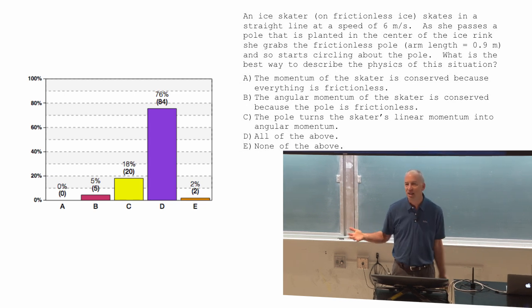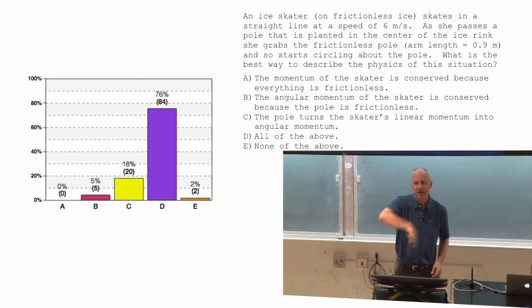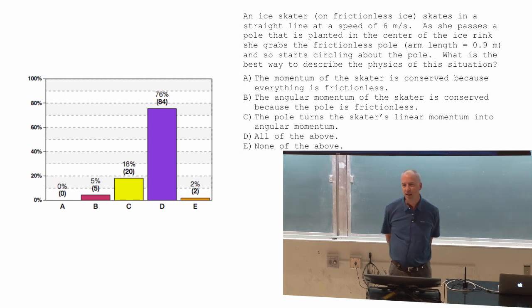Okay, to the extent that it is frictionless, which I told you that it is, yes, that's true. If there's no friction, then she will continue to go around that thing at a constant speed. So her angular momentum around that pole is not going to change. But then you come to this idea of what was going on when she was moving straight.